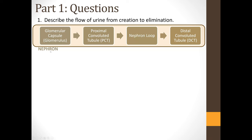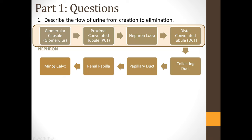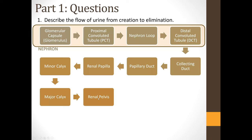The distal convoluted tubule passes the filtrate out into a collecting duct, which collects filtrate from multiple nephrons. Multiple collecting ducts then empty the fluid into a papillary duct, and at this point we can start calling the fluid urine. The papillary duct secretes urine through the renal papilla at the apex of the renal pyramid. Urine is collected in a minor calyx; several minor calyces come together to form a major calyx, and multiple major calyces form the renal pelvis, which funnels urine into the ureter.